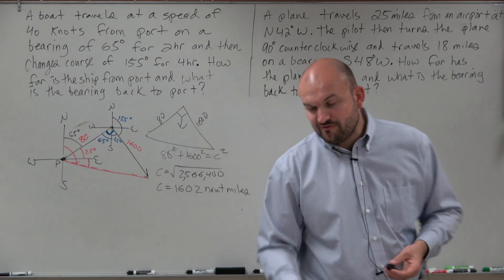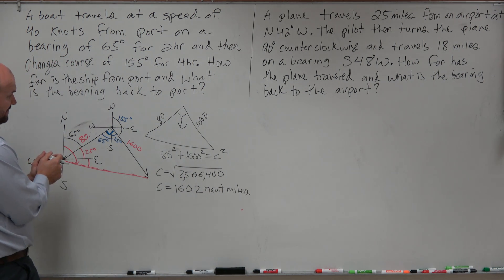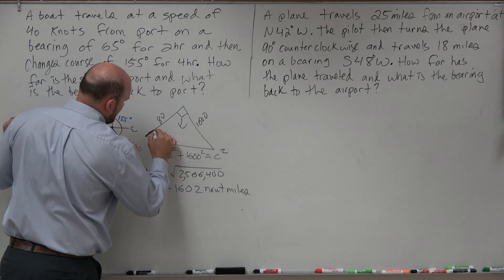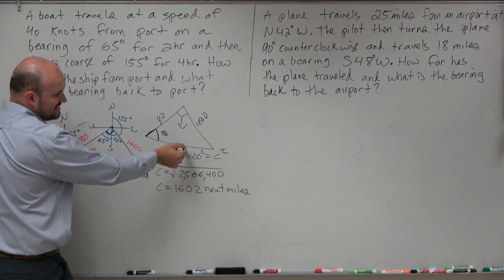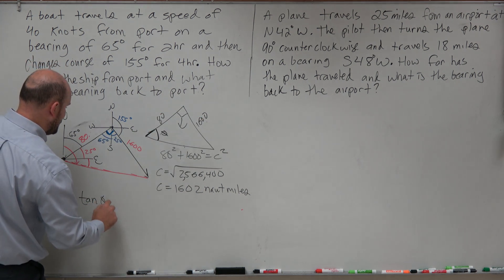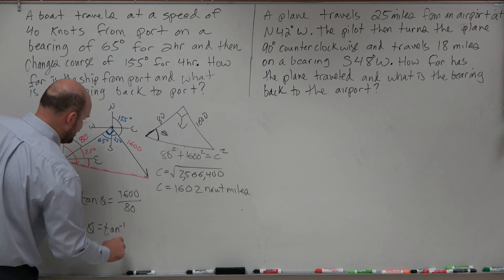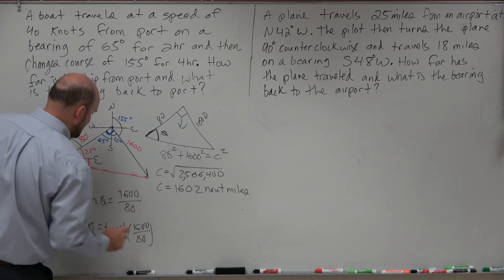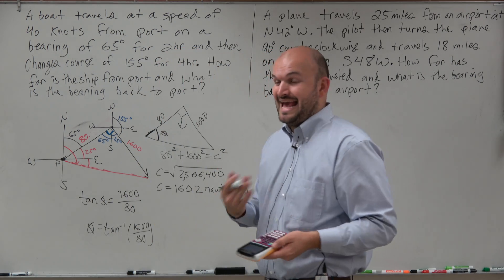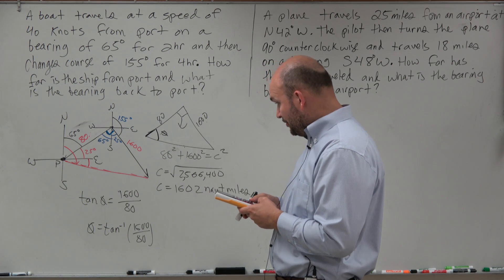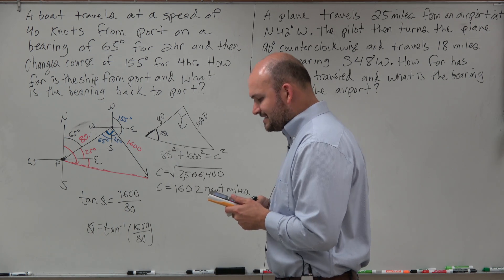Now let's figure out the angle. I need to find theta. From this angle, since the hypotenuse is known, I have the opposite and adjacent sides. So the tangent of theta equals 1,600 over 80. That means theta equals the inverse tangent of 1,600 divided by 80. Make sure your calculator is in degree mode. 1,600 divided by 80 is 20, and the inverse tangent of 20 is 87.13 degrees. Rounding to the nearest degree, that's 87 degrees.